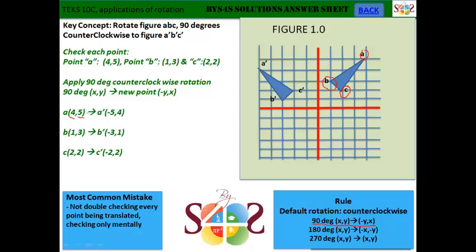A' is going to have the negative y, so the 5 turns into -5, giving us (-5,4). Then we're going to do the same for (1,3), which turns into (-3,1). And for (2,2), we do the same, which gives us (-2,2). So these are your new positions for A', B', and C'.